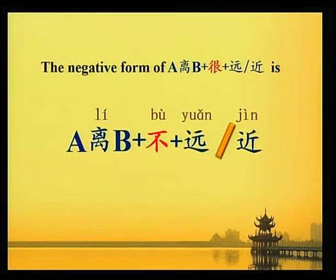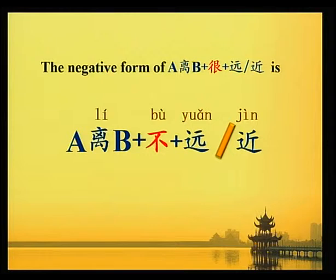The negative form of A 离 B 很远/近 (A, Li, B plus Hen plus Yuan/Jin) is A 离 B 不远/近 (A, Li, B plus Bu plus Yuan/Jin).